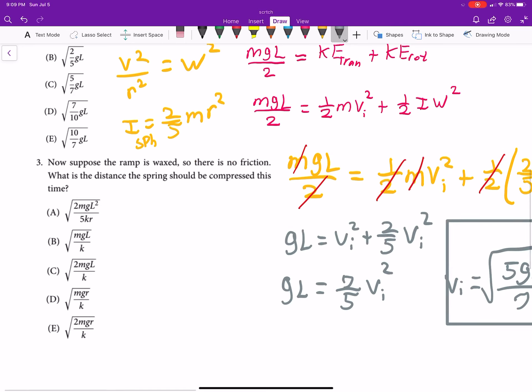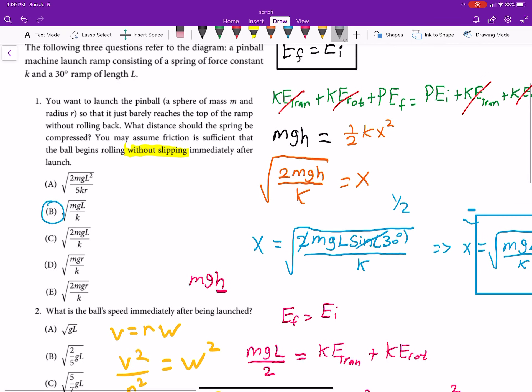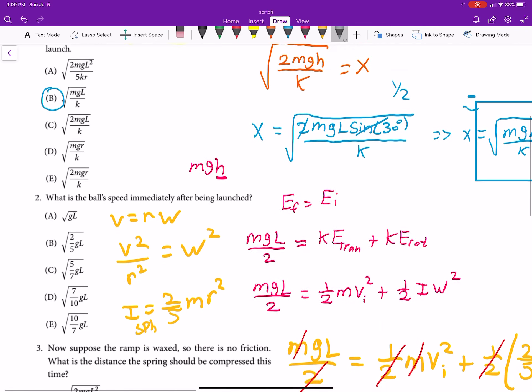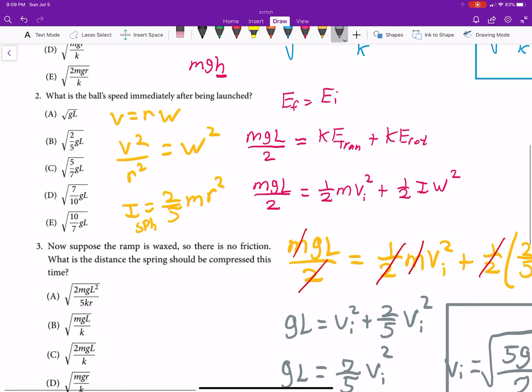So, that's that. And now, for 3, it says suppose the ramp is waxed so that there's no friction. In other words, you don't have just before when we were able to say the friction was there without slipping, now you're going to have that slipping.